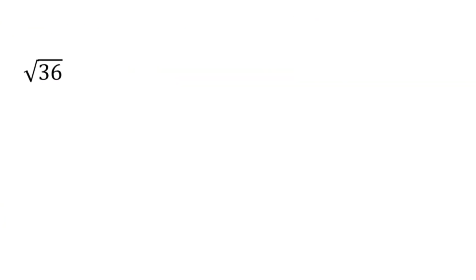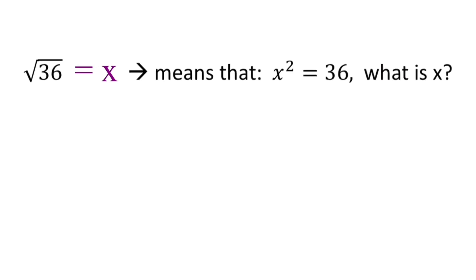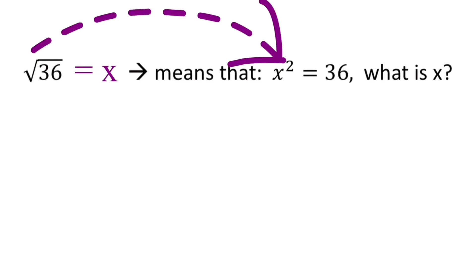So this is read as square root of 36. If we wanted to know the value of the square root of 36, we can go ahead and equal this whole expression to x. So this is read as square root of 36 equals x. Now we are going to rewrite this into its equivalent exponential form. This means that x squared is equal to 36. Our x here becomes the base of the exponential form, and our index of 2, which is invisible, becomes the exponent in the exponential form.